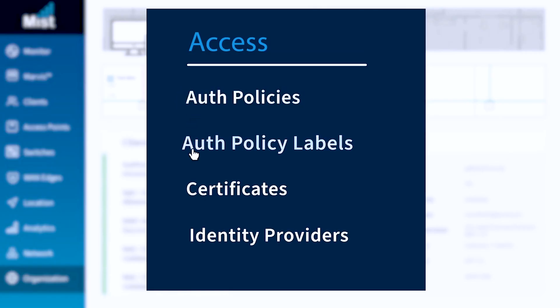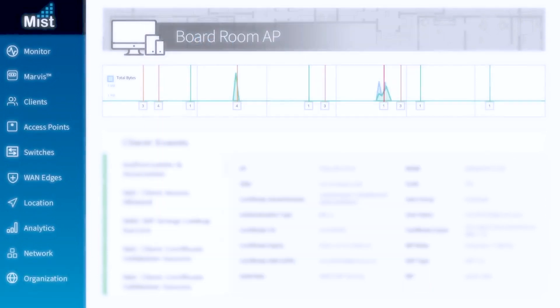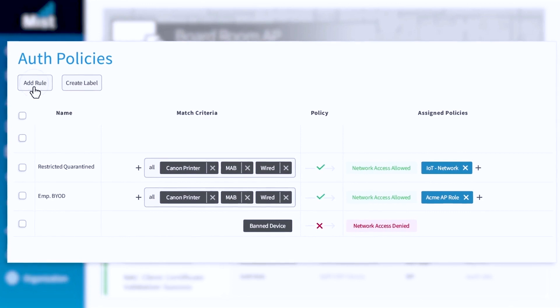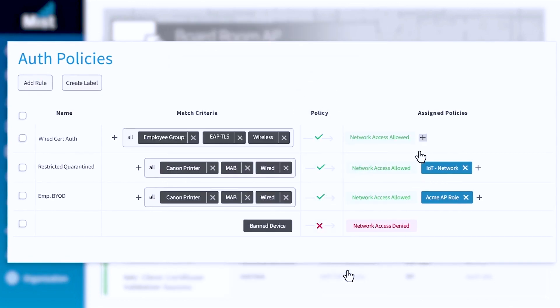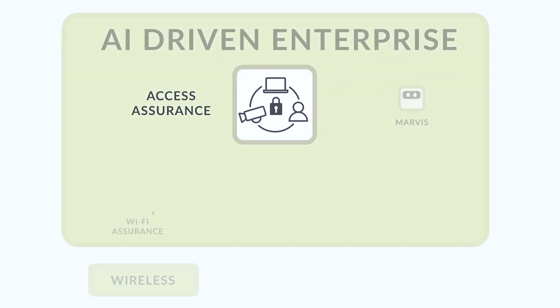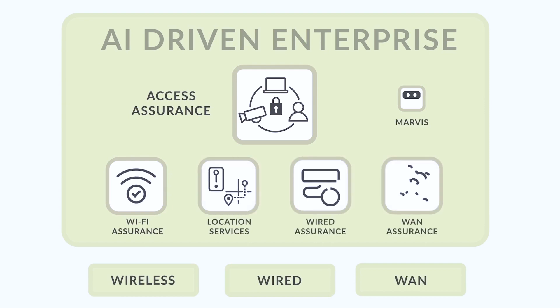You can look at specific users, devices, exact locations and events, leaving no questions about who or what has access to your network. Mist AI makes the network simpler to run while delivering a better experience to everyone on it, keeping them connected and secure.